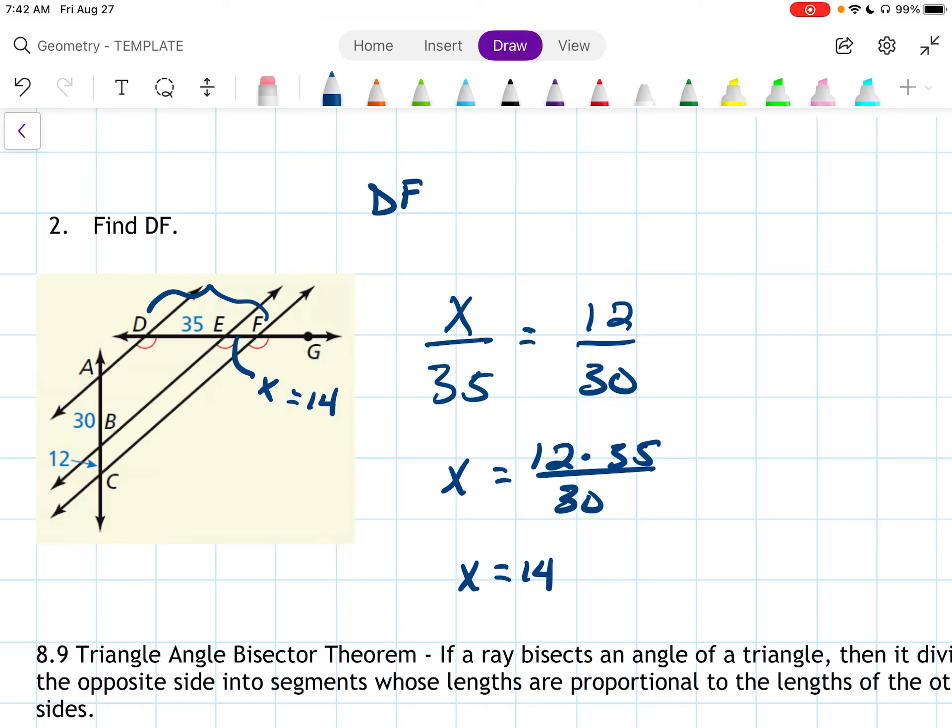So DF is going to be 35 plus 14, which is what? 49. There we are.